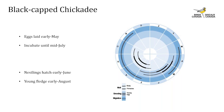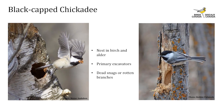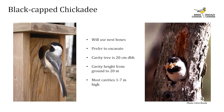Black-capped chickadees begin laying eggs in early April and continue incubating through to mid-July; the young hatch as early as the beginning of May and fledge from the nest in late July. They often nest in birch and alder trees, excavating their own nest in dead snags or rotten branches. Chickadees will use nest boxes but prefer to excavate wood shavings over using an empty box. Nest trees average about 20 cm in diameter and cavity height ranges from ground level up to 20 meters, though most cavities are in the 1 to 7 meter range.